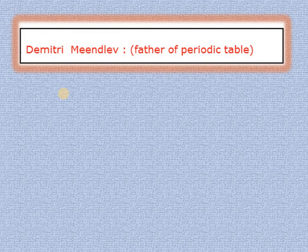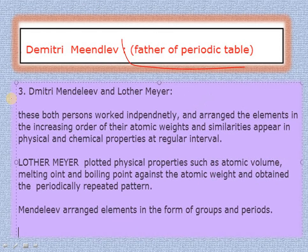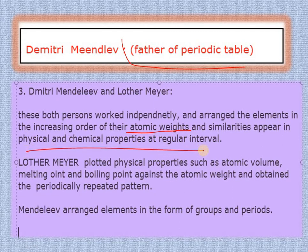After Newlands' limitations, Mendeleev came. Dmitri Mendeleev is known as the father of the periodic table. Mendeleev and Lothar Meyer both worked independently but worked on the same thing — arranging elements depending upon atomic weights. Their physical and chemical properties repeat at regular, fixed intervals. Lothar Meyer made a plot of atomic volume versus atomic weight and observed that melting and boiling points vary when elements are arranged by atomic weight.